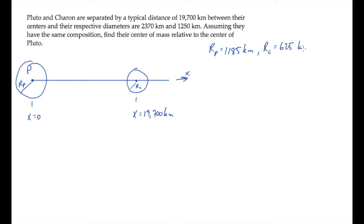The center of mass is located at the position given by the sum of mi xi divided by the sum of the masses. The sum of the masses times the positions divided by the sum of the masses. We know the positions of the two objects, but we don't know their masses.